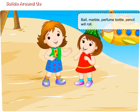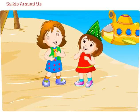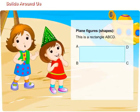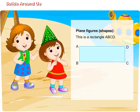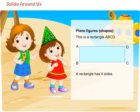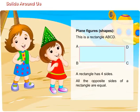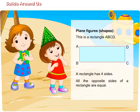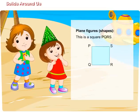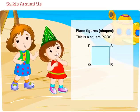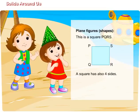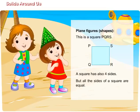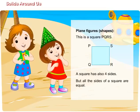Maggie, now I will tell you about some plane figure shapes. This is a rectangle. We can name it as ABCD. A rectangle has four sides, and all the opposite sides of a rectangle are equal. This is a square. We can name it as PQRS. A square also has four sides, but all the sides of a square are equal.